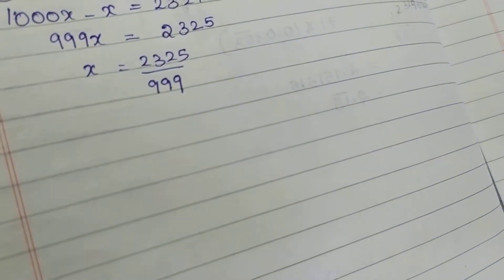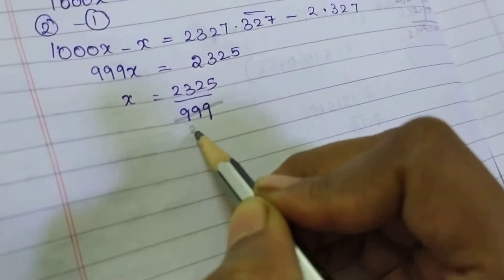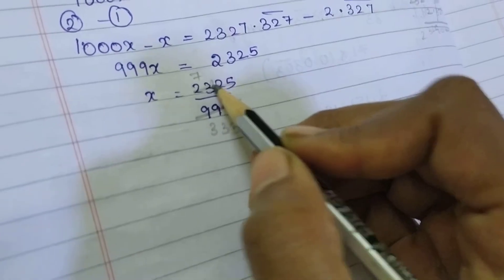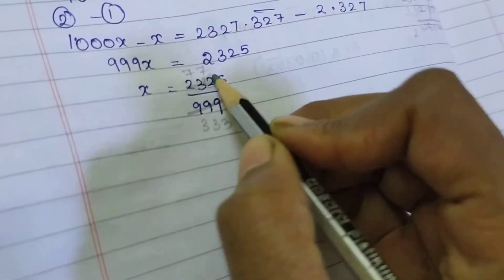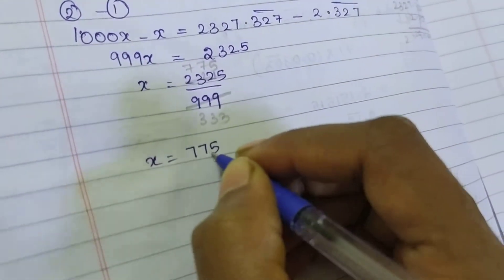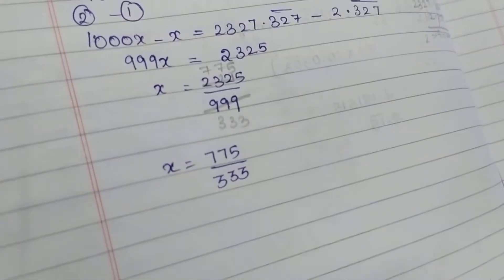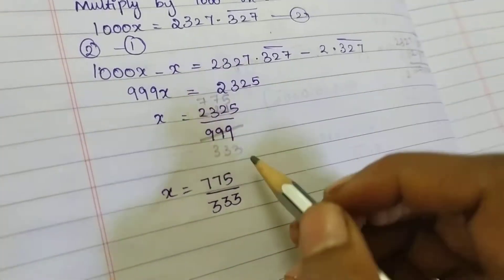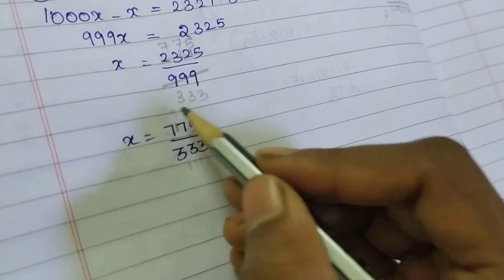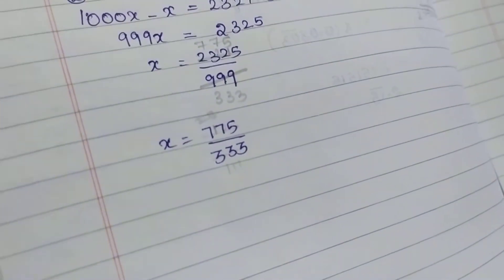Whether it can be simplified in the 3 times table — we will try. 9 is in the 3 table, so dividing by 3: 999 becomes 333, and 2325 becomes 775. So x = 775/333. Check if any further cancellation is possible. It is not possible to cancel further, so obviously this is your answer: x = 775/333.